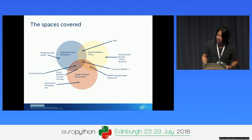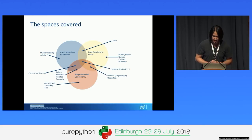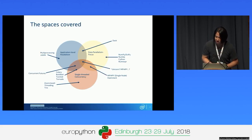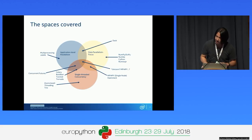If we break the space into three main areas using a Venn diagram—application level parallelism, single-threaded concurrency, and data parallelism focus—we can split up the majority of frameworks, categorize them, and see what areas overlap.